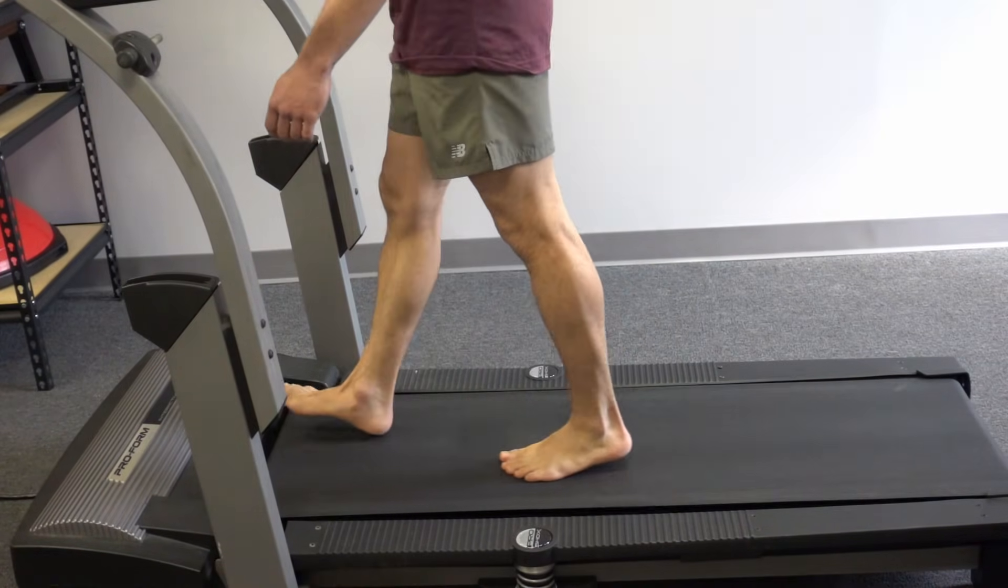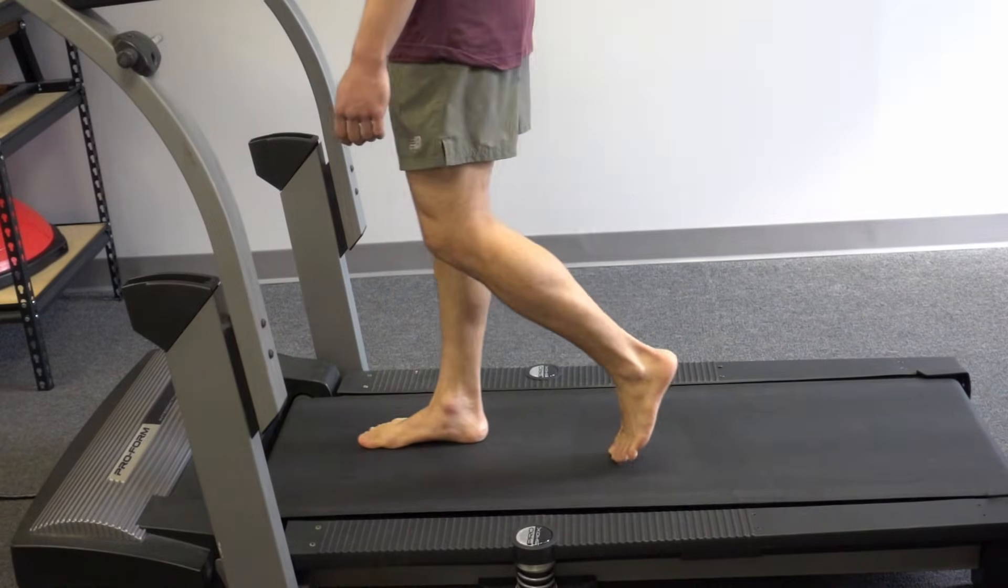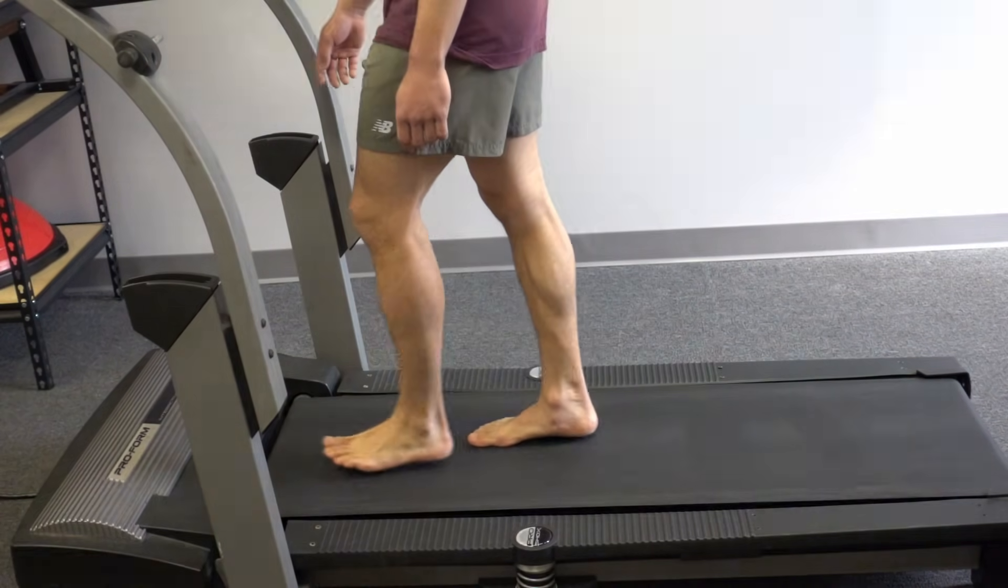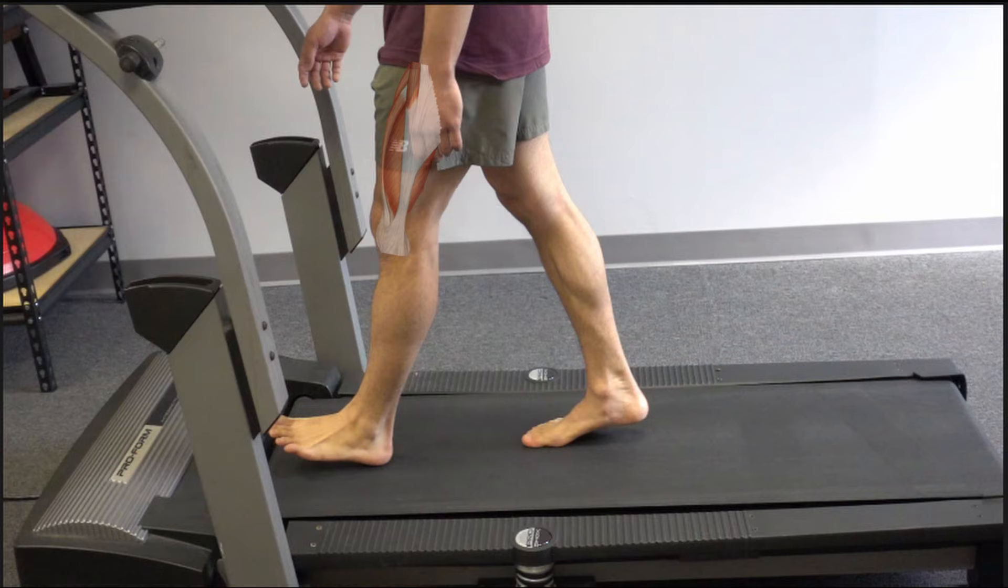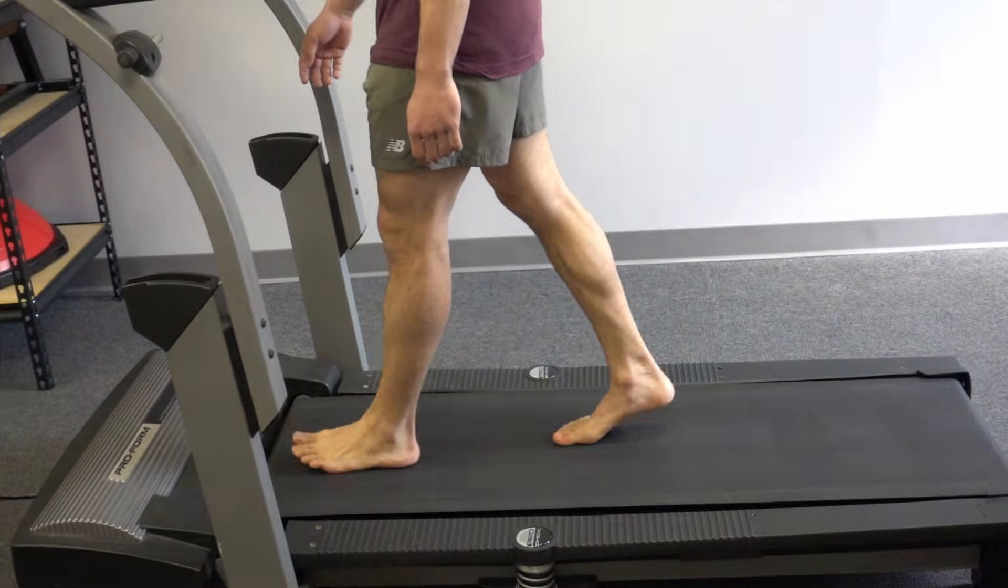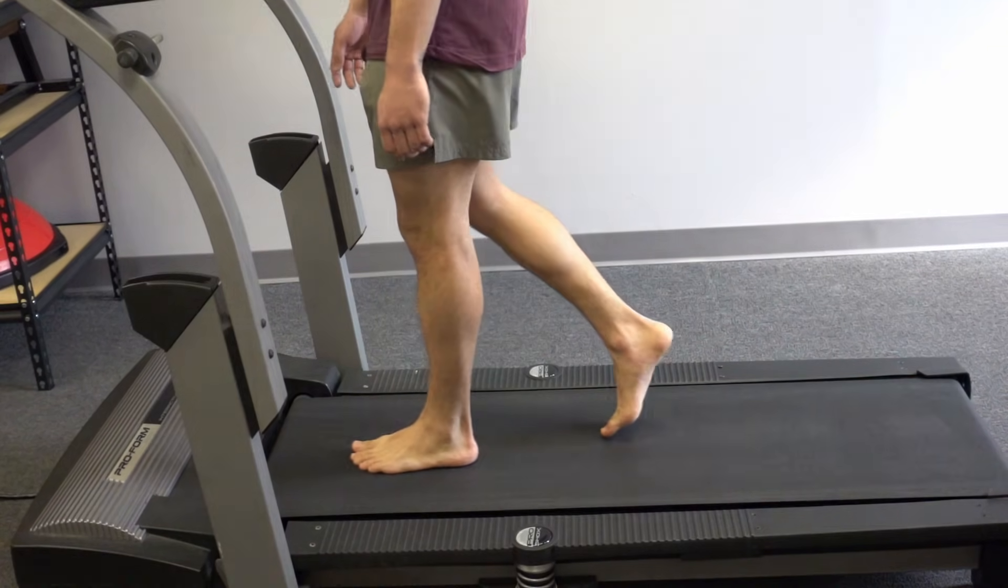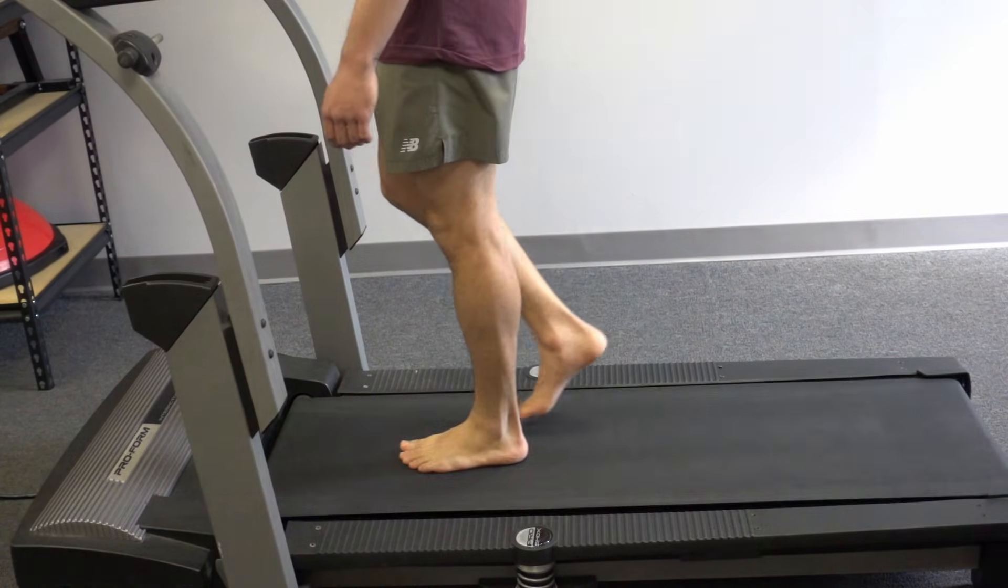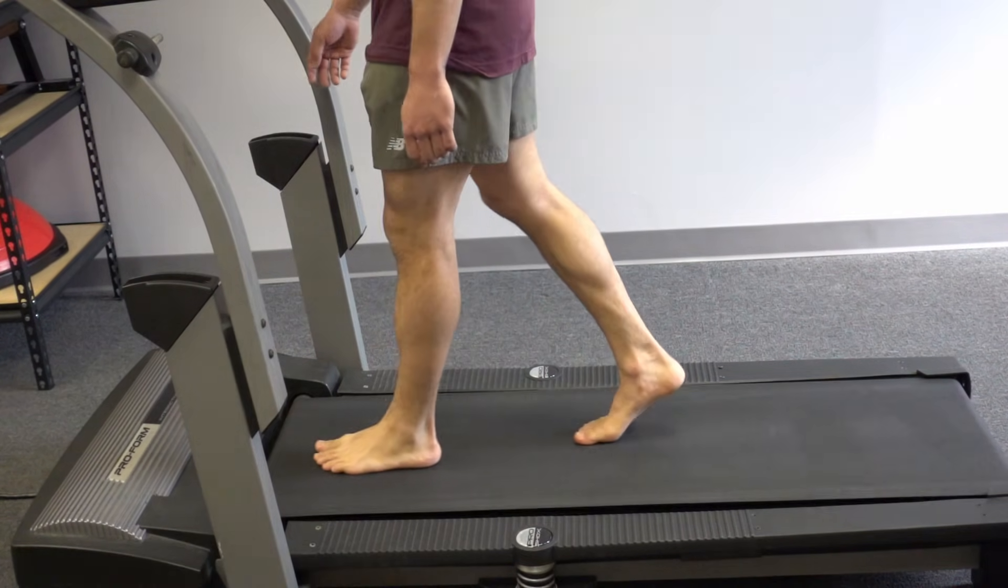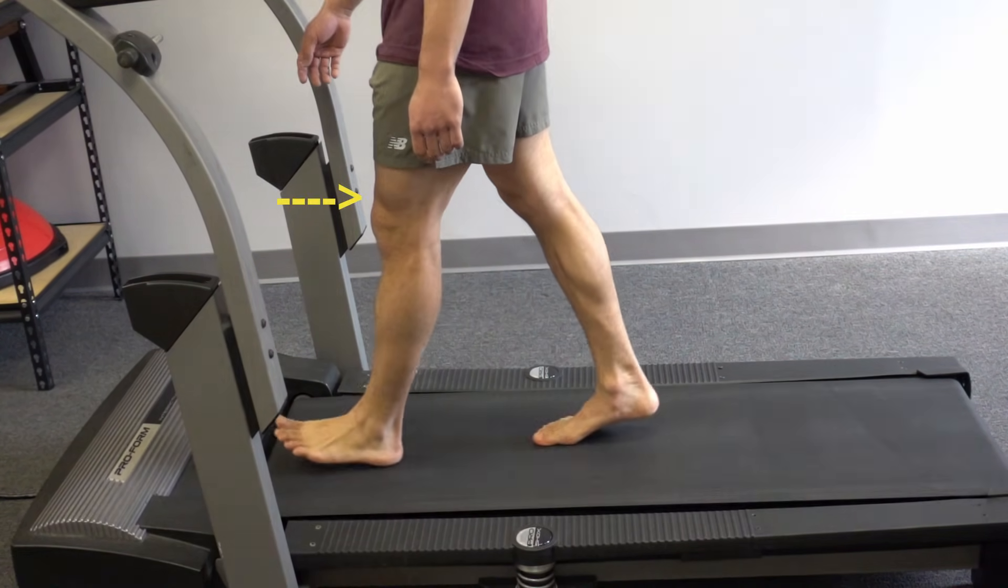So as we discussed, our quadriceps first eccentrically contract during loading response to absorb the shock from the ground. They quickly transition into a concentric contraction to fully extend the knee during the stance phase of gait. Here you can visibly see the quadriceps contract and then relax.